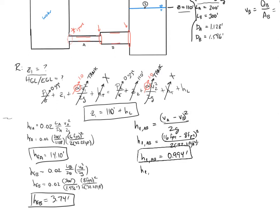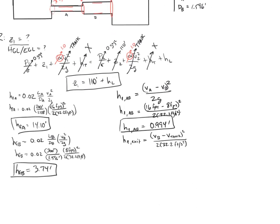For the exit loss — pipe B discharging into the second reservoir — we treat it as an expansion from vB to the tank velocity of zero: hL,exit = (vB − 0)² / 2g = (8 − 0)² / 64.4 = 0.994 feet. It turns out to be the same as the pipe expansion loss.